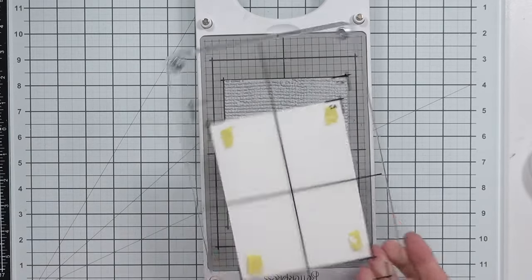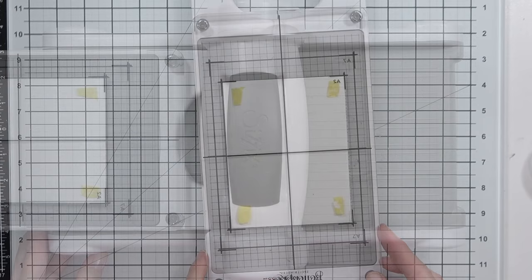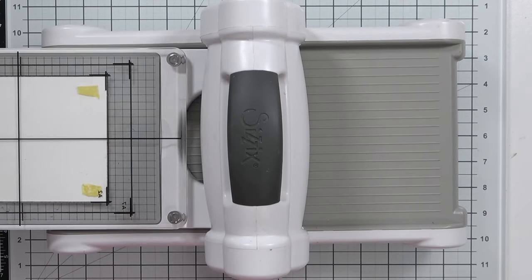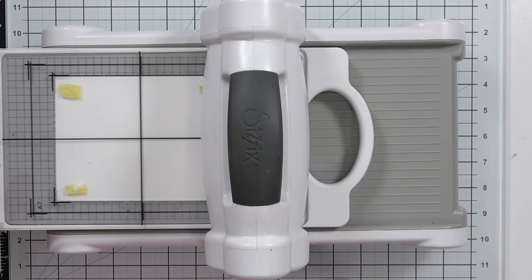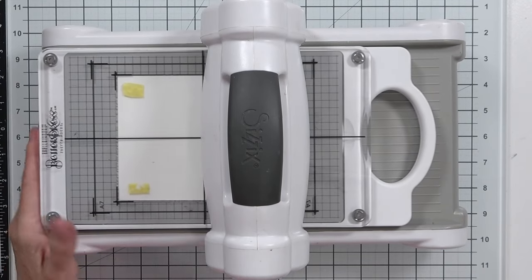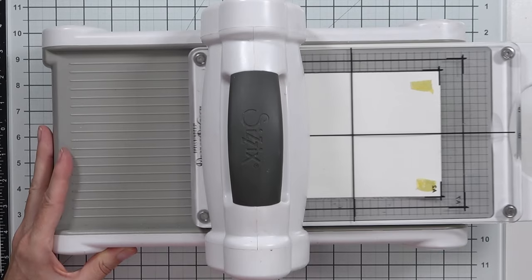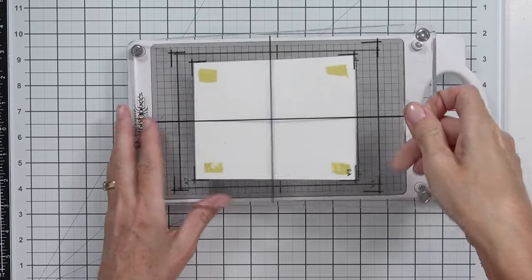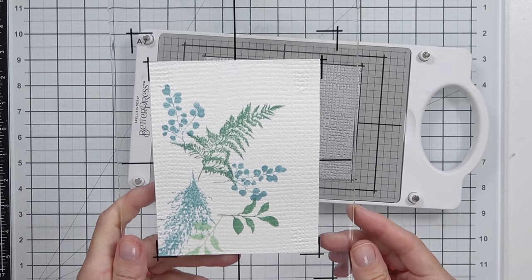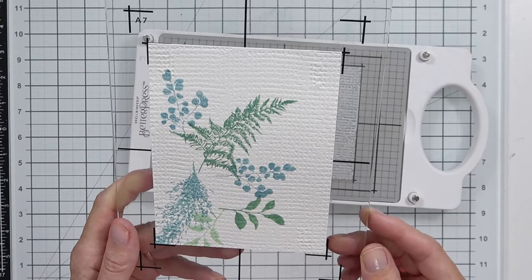The only thing that's different here is that I haven't actually added any ink to the press plate before I've rolled it through. Although I did add ink to the background panel before I rolled it through, but what that's going to give me is this amazing textured result on both the leaf images that I've stamped and on the whole background panel. I think it looks fabulous.